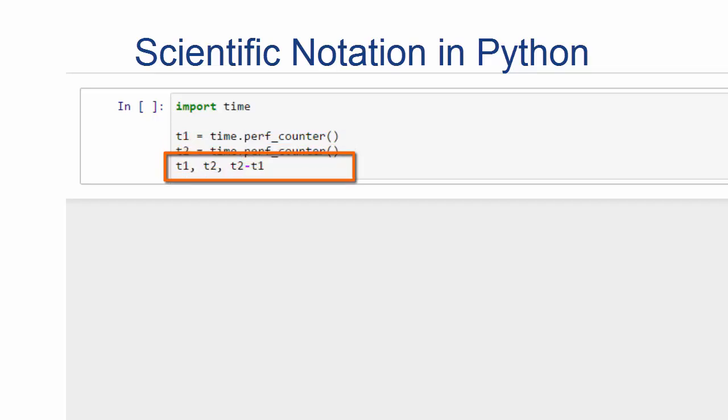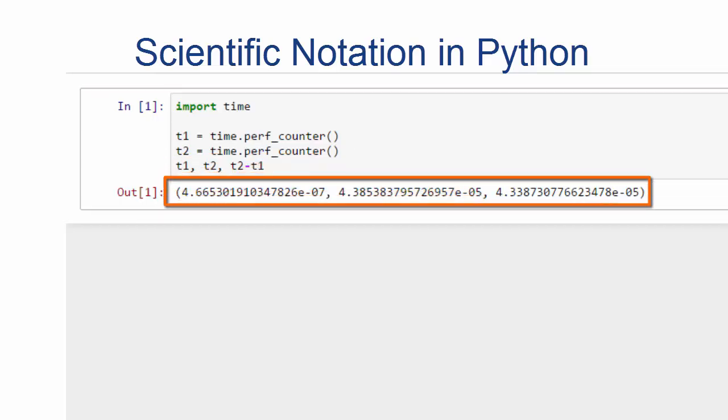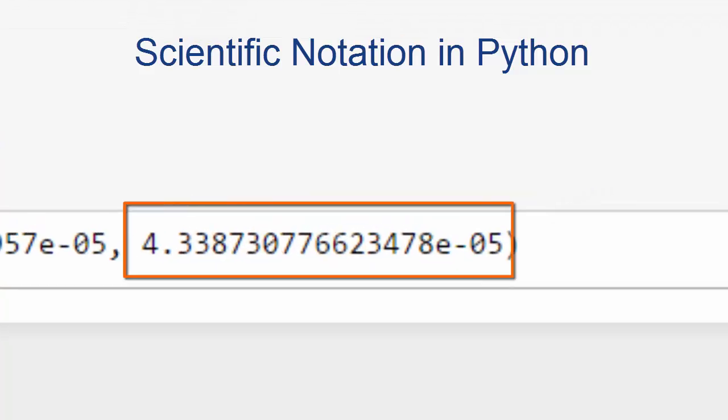And then we look at the difference between t2 and t1. And here's the result. And the interesting number is this third number, 4.33873, and so on. And then at the end, this e-05. So what's that e-05 mean?